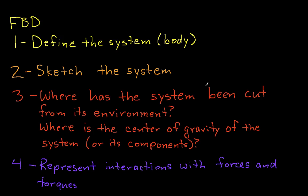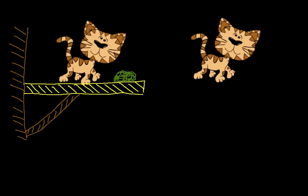Step three is to determine where the system has been cut from its environment, and where the center of gravity of the system is. Our system has been cut from its environment at this paw and this paw — those are the two paws that were touching the beam. No other part of the cat was touching anything, so these two paws are the points where the cat was interacting with its environment.